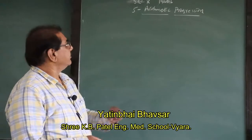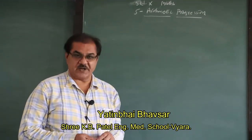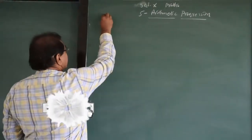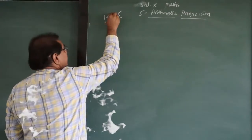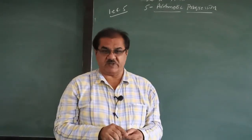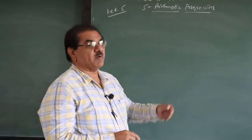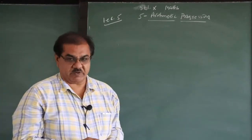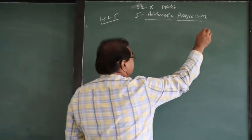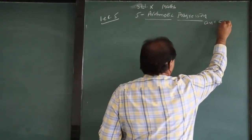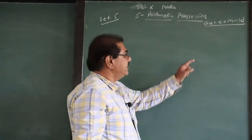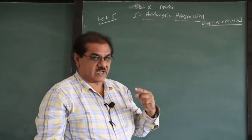Hello friends. Nowadays we are doing standard 10 maths, chapter number 5, Arithmetic Progression. This is my lecture number 5 of this chapter. In the last lecture, we took certain objective type questions from exercise 5.2, and now we take descriptive questions from exercise 5.2. Before that, please remember the formula: An = A + (N-1) × D, because we are mostly using this formula only.